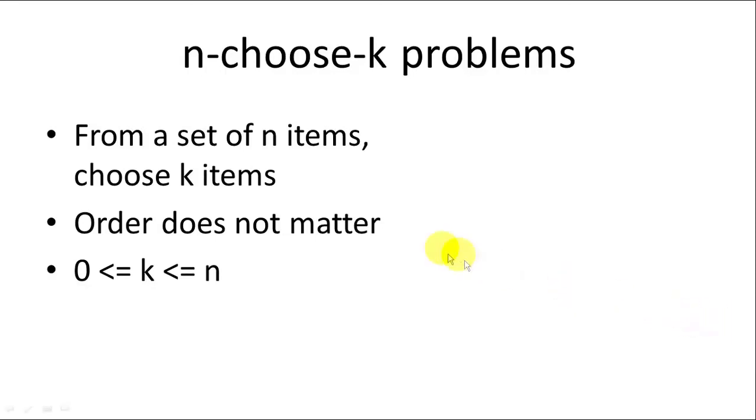The problem is from a set of n items we want to choose k items and we're trying to determine the number of possible combinations of items. Order does not matter and the number of items we're choosing k is always going to be between 0 and n.